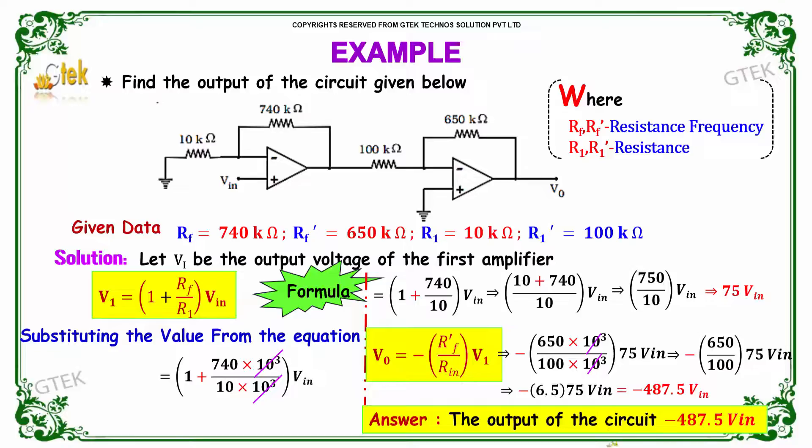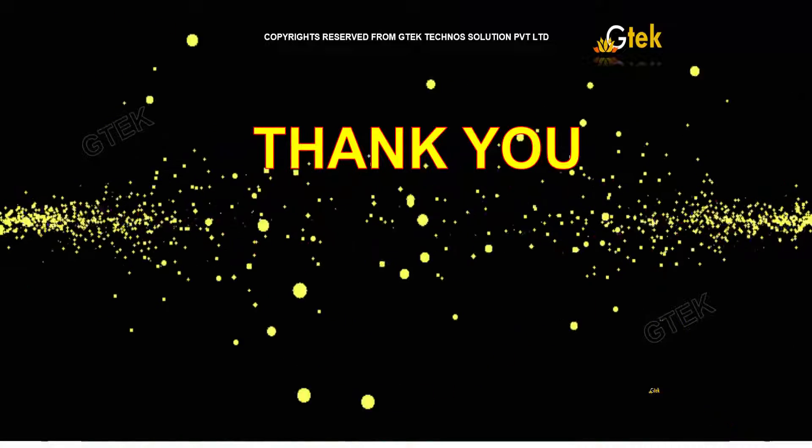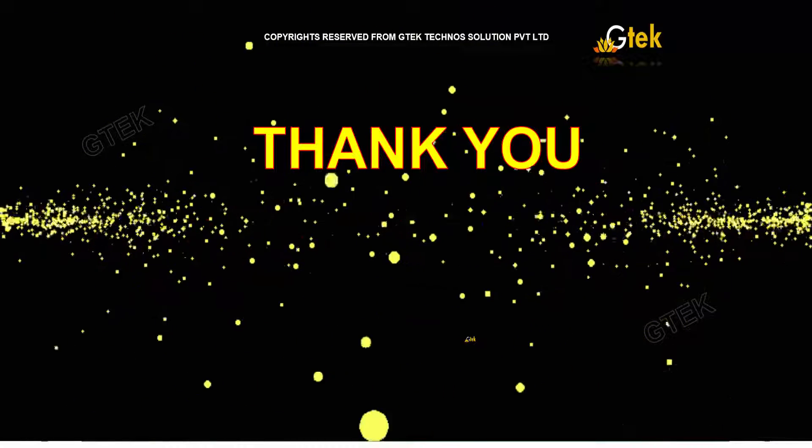So the output of this circuit is minus 487.5 Vin. That's it. Thanks for watching on G-Tech Techno Solutions Problem. Thank you.